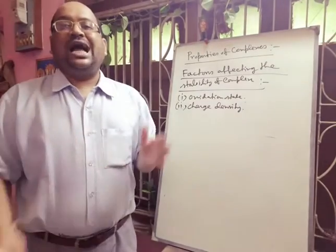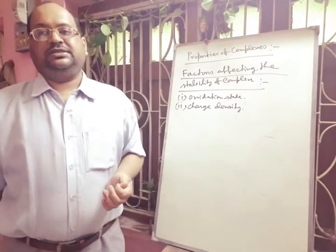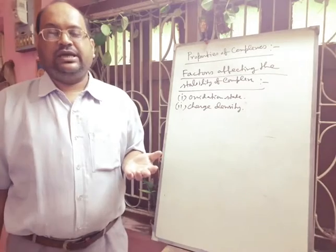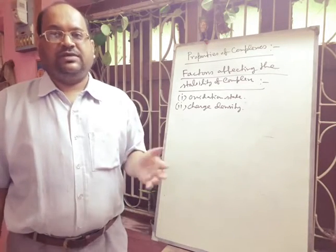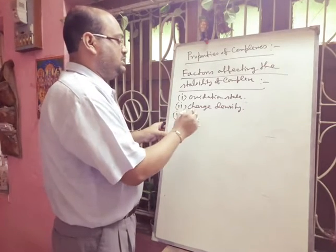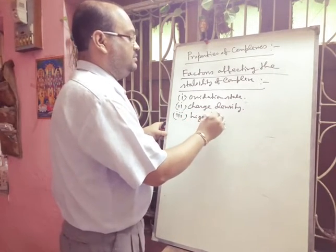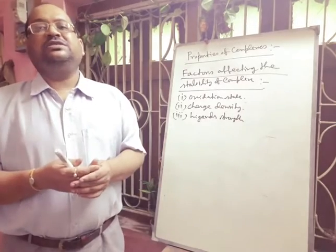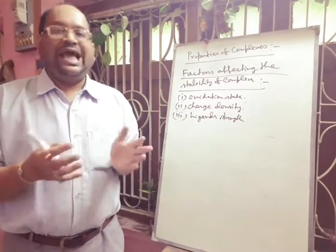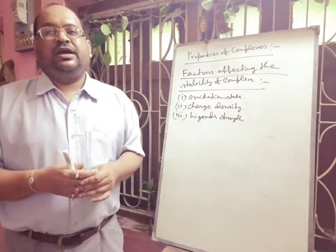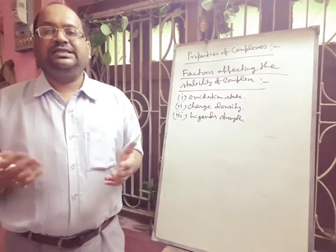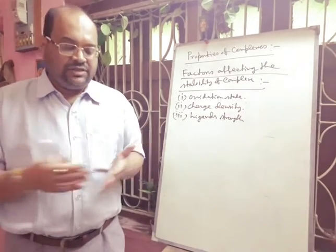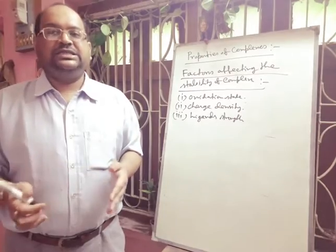The second factor is the charge density of the central metal ion — higher the charge density, greater is the stability of the complex. The third factor is ligand strength — strong ligands form more stable complexes. Cyano and amine complexes are more stable than those formed by halide ions, because cyanide and amines are stronger Lewis bases and interact more strongly with the metal.